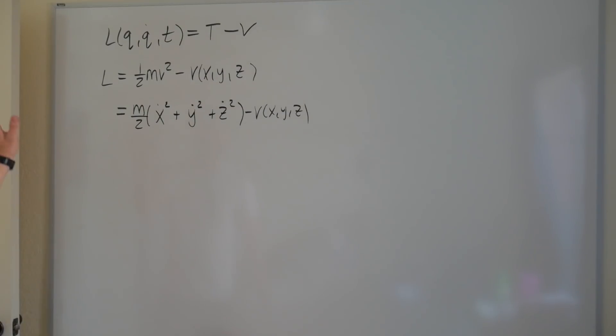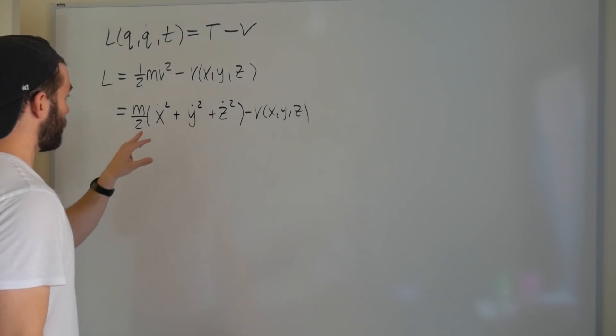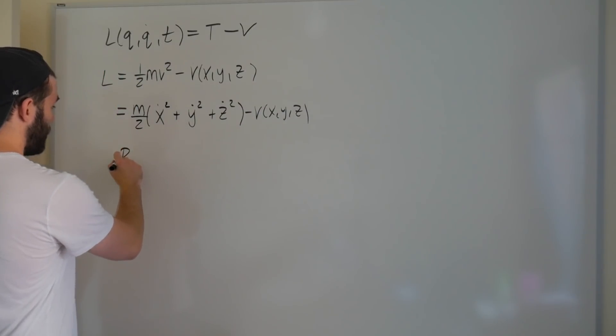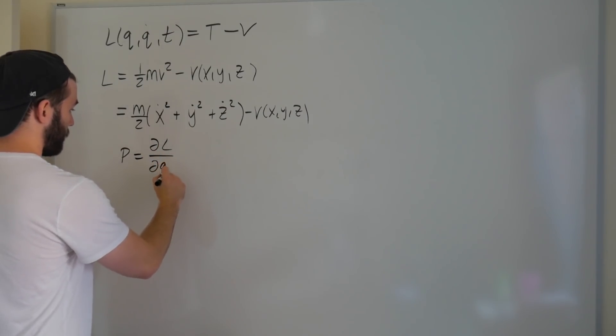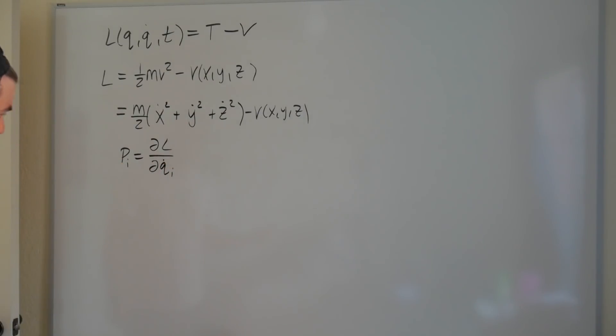Cool. Moving on. Next, what we want to do is find an expression, an equation, for the generalized momentum. Now, luckily, we already know what that is. The generalized momentum is the derivative of the Lagrangian with respect to the generalized velocity. Let's call it an i. We'll look at the i-th component.